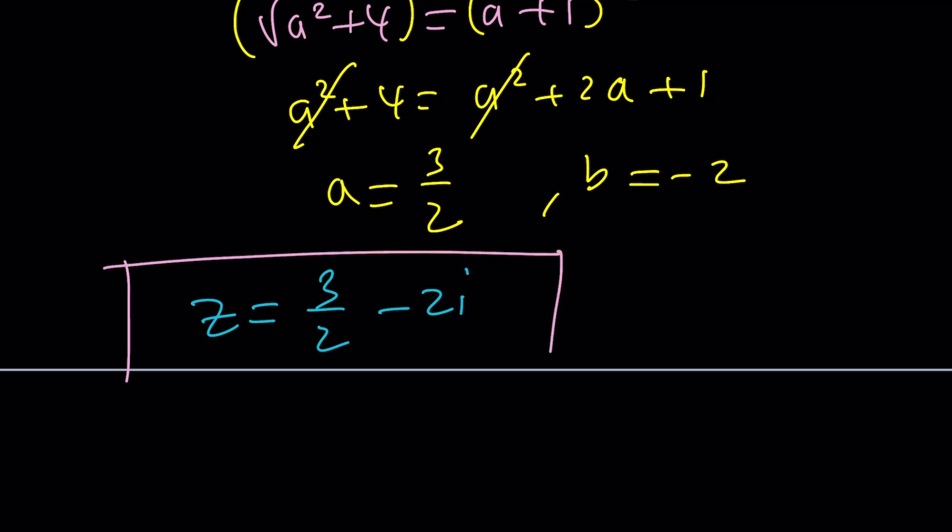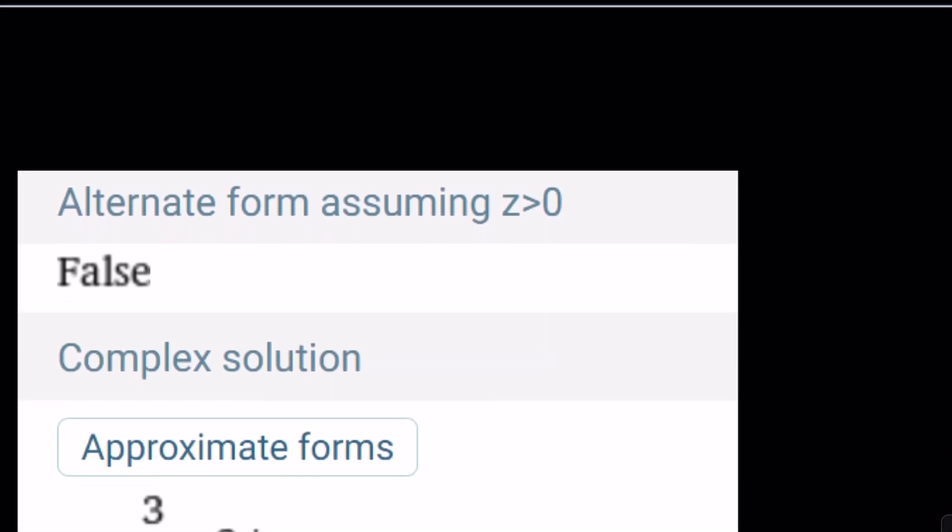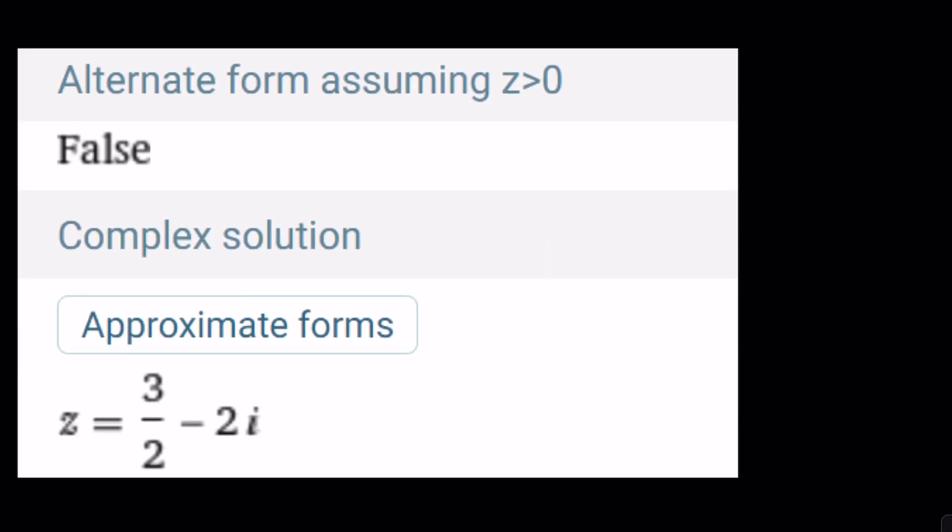And this should normally bring us to the end of this video. But let's go ahead and take a look if we have any results from Wolfram Alpha. I'm not exactly sure if I did. And yes, I did. Alternate form assuming z is greater than zero - false. z is not real. And the approximate forms, that will be the answer: 3 halves minus 2i.